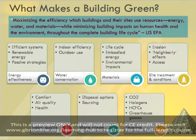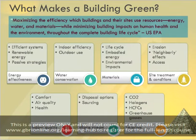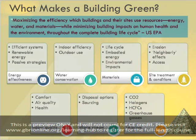Many interventions will touch on more than one of these categories. For instance, installing windows to provide daylighting will decrease the energy used for lighting and improve indoor quality, but may result in more energy being used for thermal conditioning if the windows used are not well insulating.